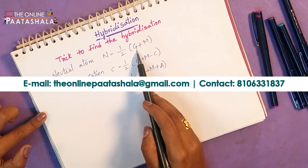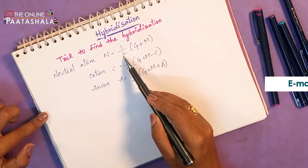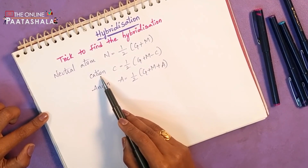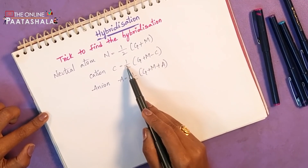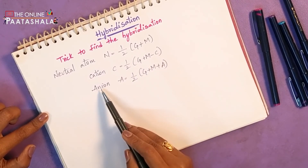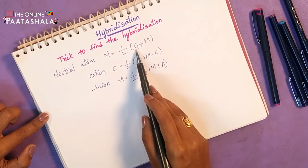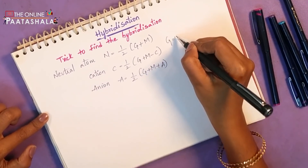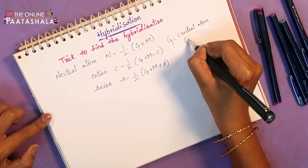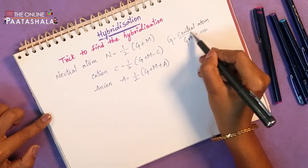These are the formulas for a neutral atom. Whenever you take a neutral atom, how to calculate the hybridization: that is 1/2 of (G + M). For a cation, how to calculate: 1/2 of (G + M − C), where C is the cation. For an anion, that equals 1/2 of (G + M + A). What does G define? G is nothing but the central atom's group number.